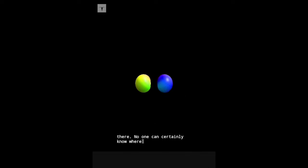No one can certainly know where it is until an observer actually looks. And that's because the electron is in what's known as a superposition.